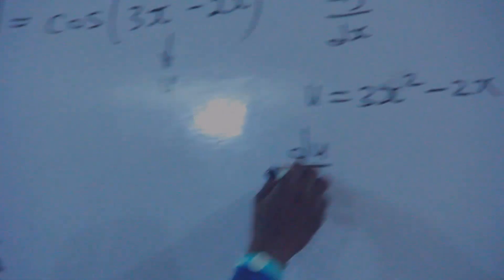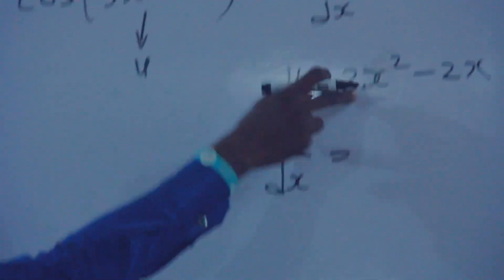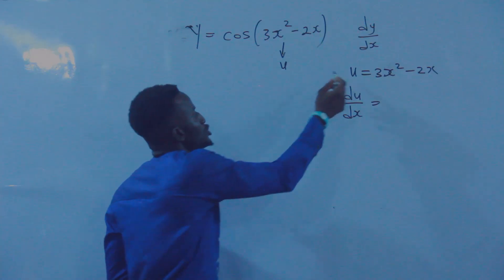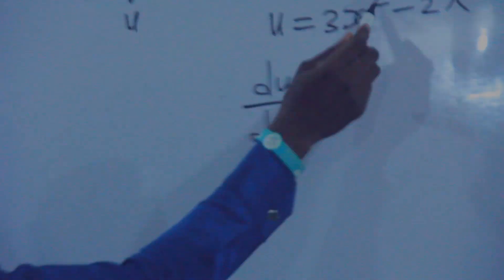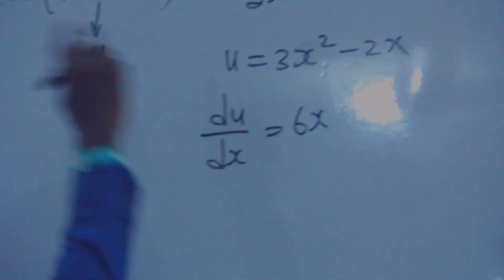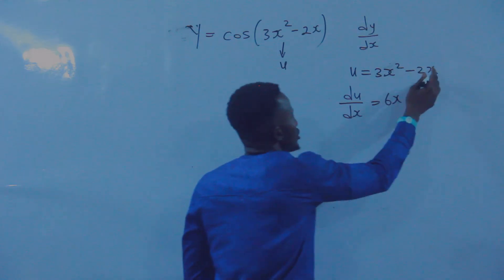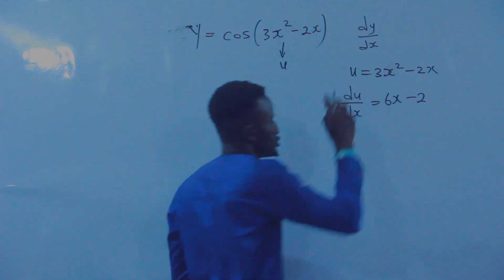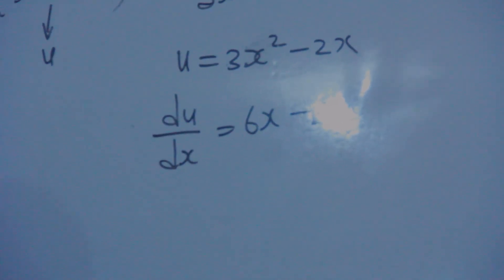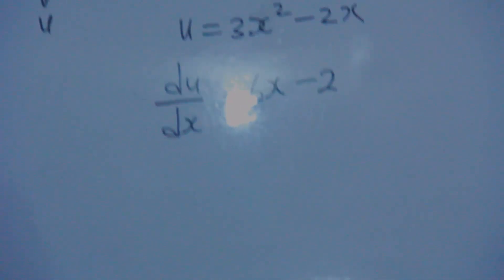Now, if you differentiate this, that is dU/dX, this will be 2 times 3, that is 6, then X raised to the power of 2 minus 1, that is 1. Then 1 times minus 2 is minus 2, X raised to the power of 1 minus 1, that is 0, which makes the X leave the equation.